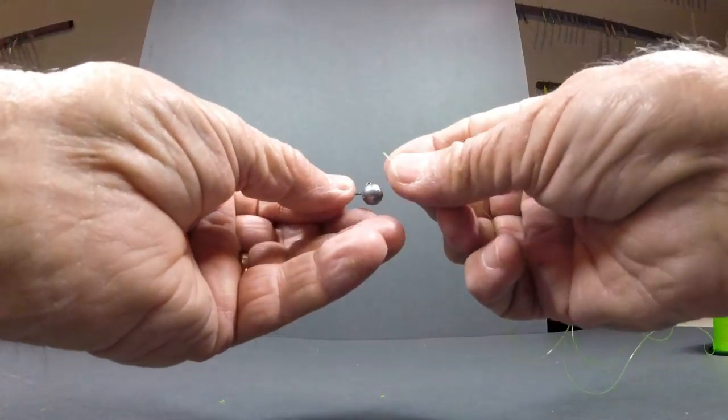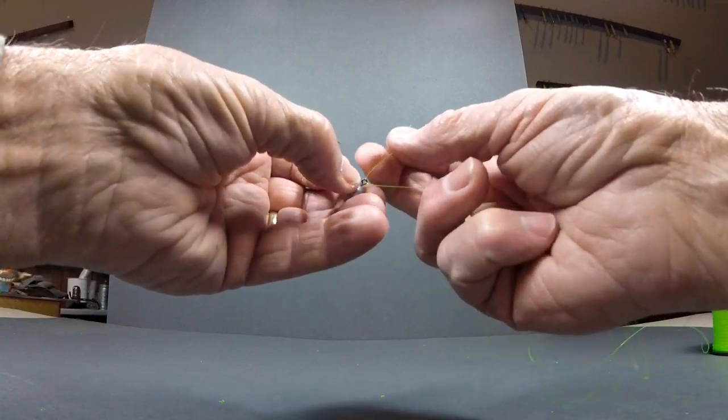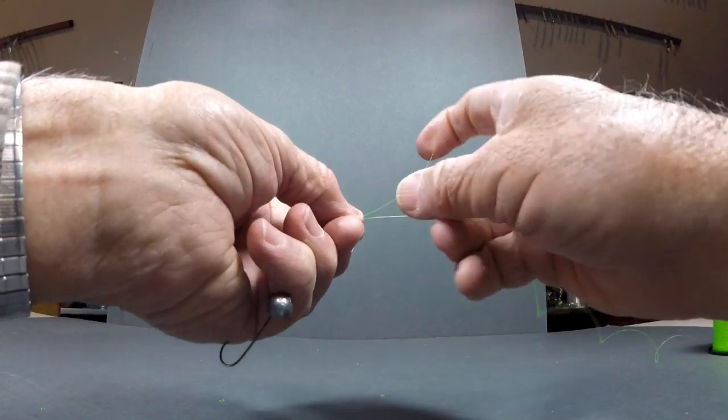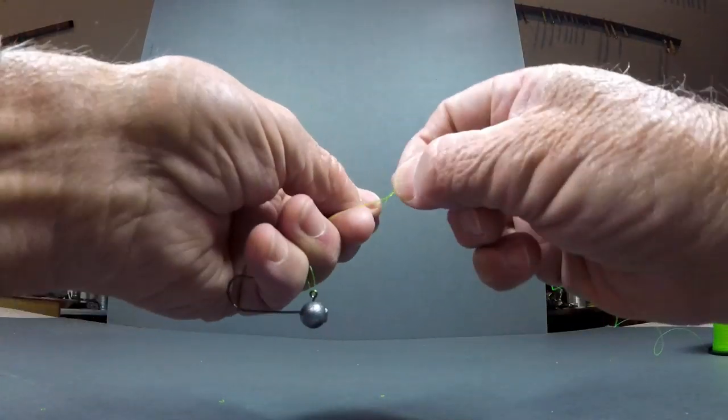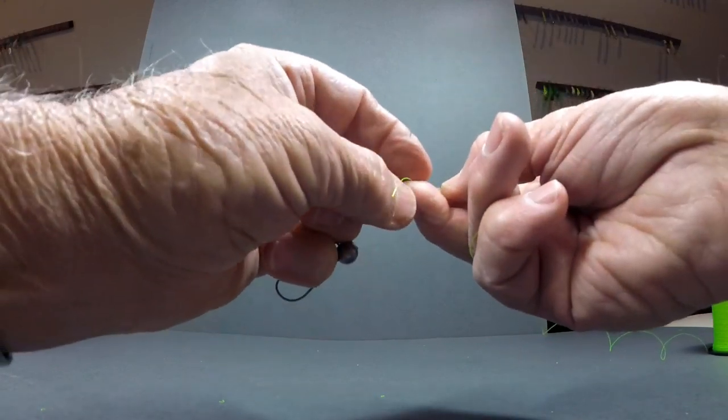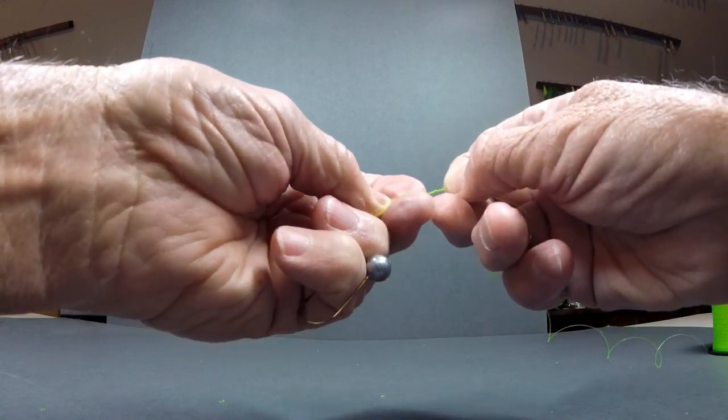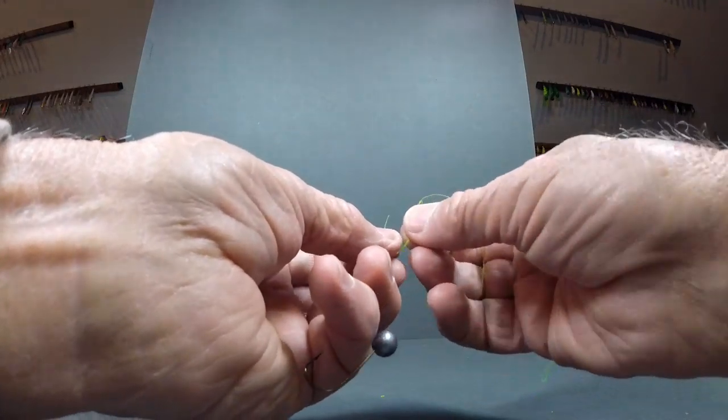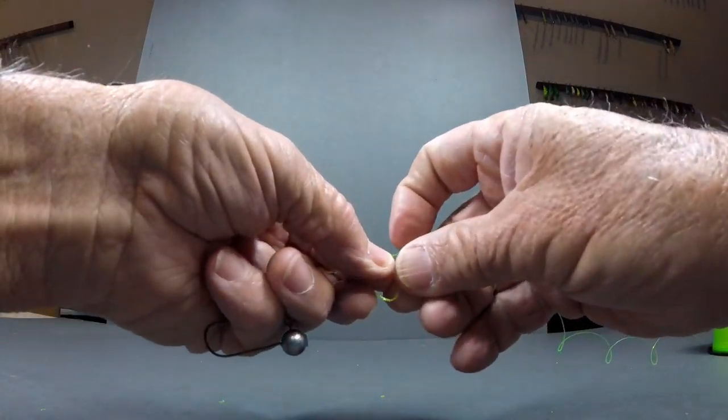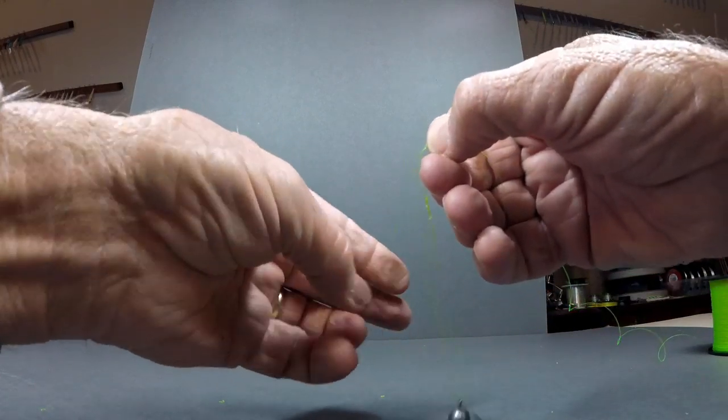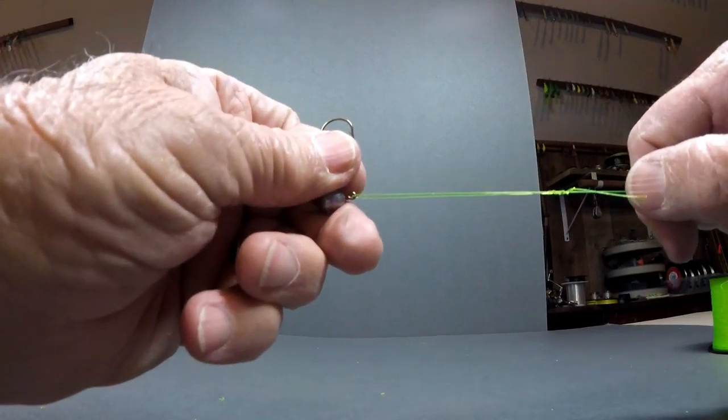Up to this point, we have been using what I call the manual method of tying our knots, but there's a faster way to do it, which I call the spinning method or the fast method. In the method that we're tying now, which is the slow method, we're wrapping the tag end around the main line. But you can also wrap the main line around the tag end, and it improves the speed. I can tie the manual method in about 20 to 30 seconds, but I can tie the fast method or the spinning method in around 10 seconds.